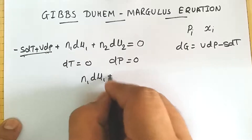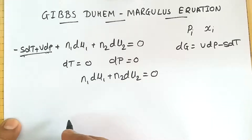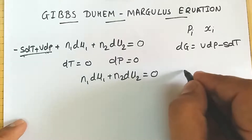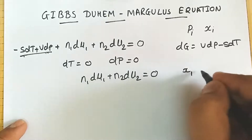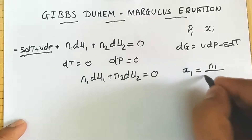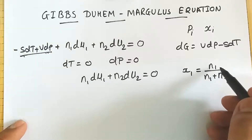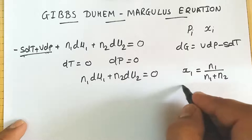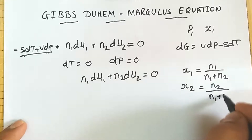We again have n1 dμ1 plus n2 dμ2 equals 0. Now let us recall the definition of mole fraction. The mole fraction of constituent 1, x1, can be written as n1 upon n1 plus n2 — it is the fraction of the number of moles of that constituent divided by the total number of moles. Similarly, the mole fraction x2 equals n2 upon n1 plus n2.